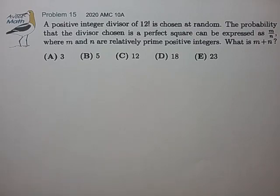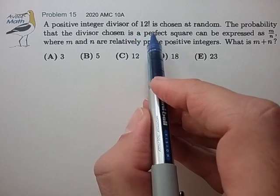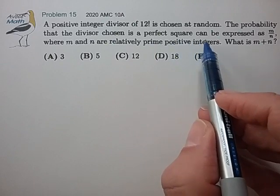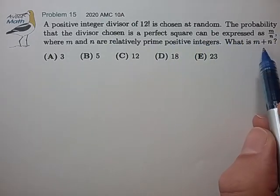Hi, this is problem 15 from the 2020 AMC 10a. A positive integer divisor of 12 factorial is chosen at random. The probability that the divisor chosen is a perfect square can be expressed as the reduced fraction m over n. What is the sum m plus n?